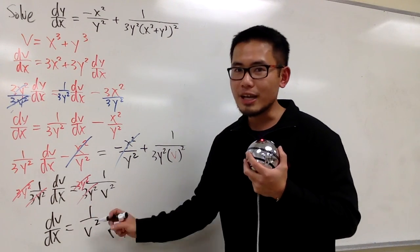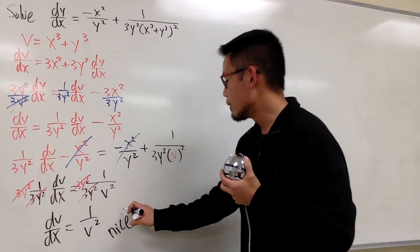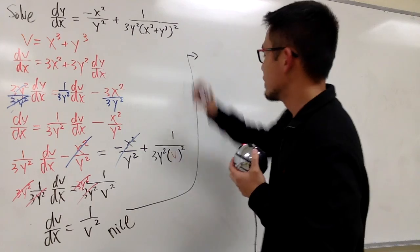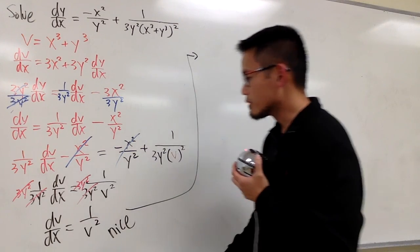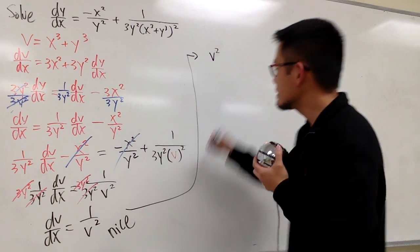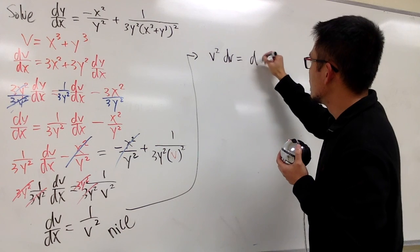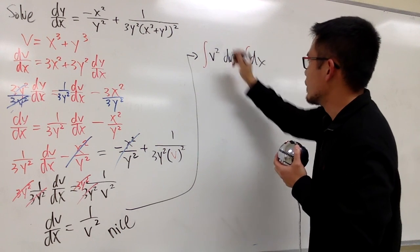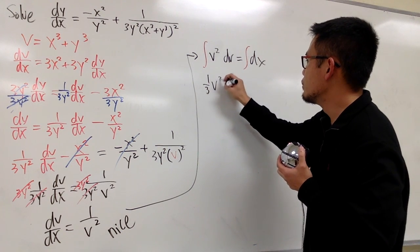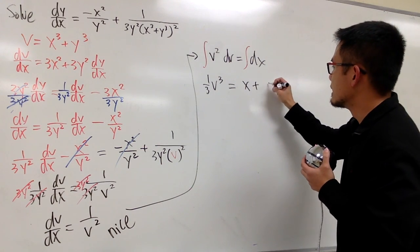Anyways, this is so nice, it's because we can do this by separating the variable. I will just do that right here for you guys, alright? Let's multiply v on both sides and dx on both sides, so we will have v squared, multiply v squared on both sides, v squared, dv equals to dx. And of course, integrate, integrate, we get 1 third, v to the third power, and this is equal to, this right here is just x plus c.